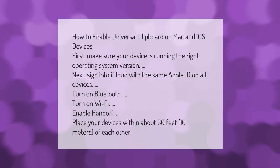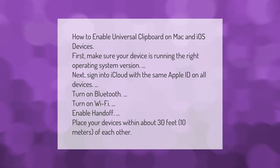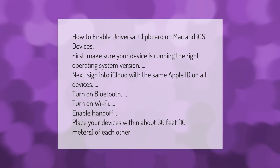How to enable universal clipboard on Mac and iOS devices: First, make sure your device is running the right operating system version. Next, sign into iCloud with the same Apple ID on all devices. Then turn on Bluetooth, turn on Wi-Fi, enable Handoff, and place your devices within about 30 feet (10 meters) of each other.